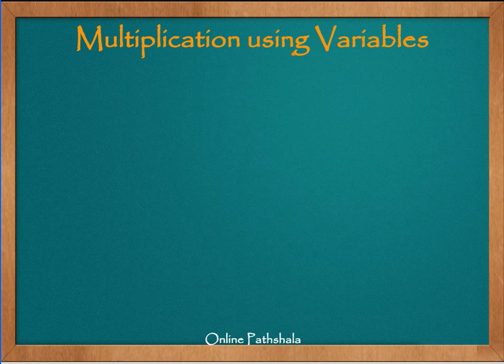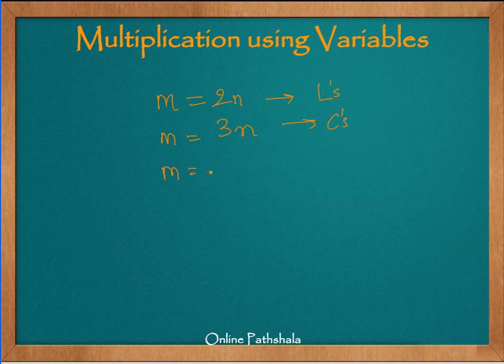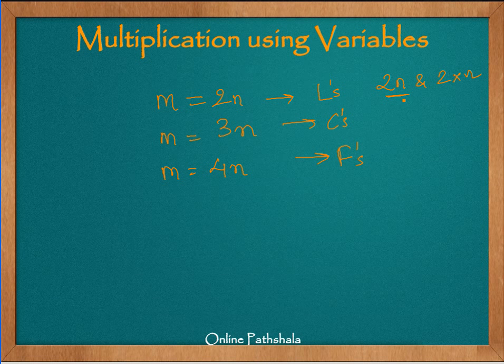Similarly, we can do multiplication using variables. I think the most common example you understood was M equals 2N when we wanted to form L patterns. Then M came out to be 3N when we were forming C patterns using matchsticks, and then M came out to be 4N when we wanted to form F patterns using matchsticks. So this is all multiplication. 2N and 2 cross N is the same thing, but it's just a convenient way of writing 2N or 3N or 4N. We can also multiply a variable by itself, which can be written as N squared. We can multiply two different variables like A times B. So you can do this multiplication, and in the above cases we have multiplied variables with fixed numbers, so that is also possible.